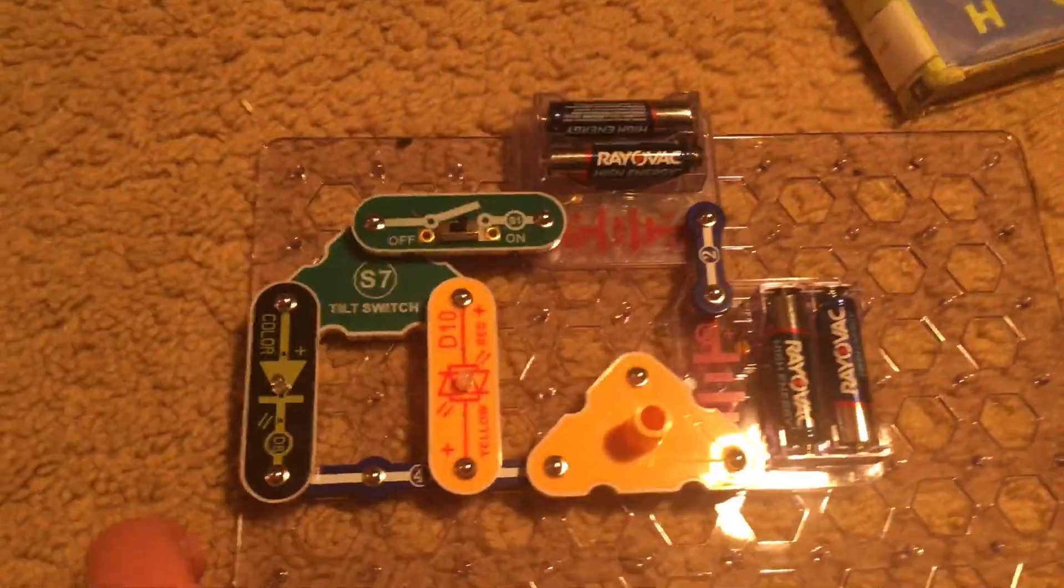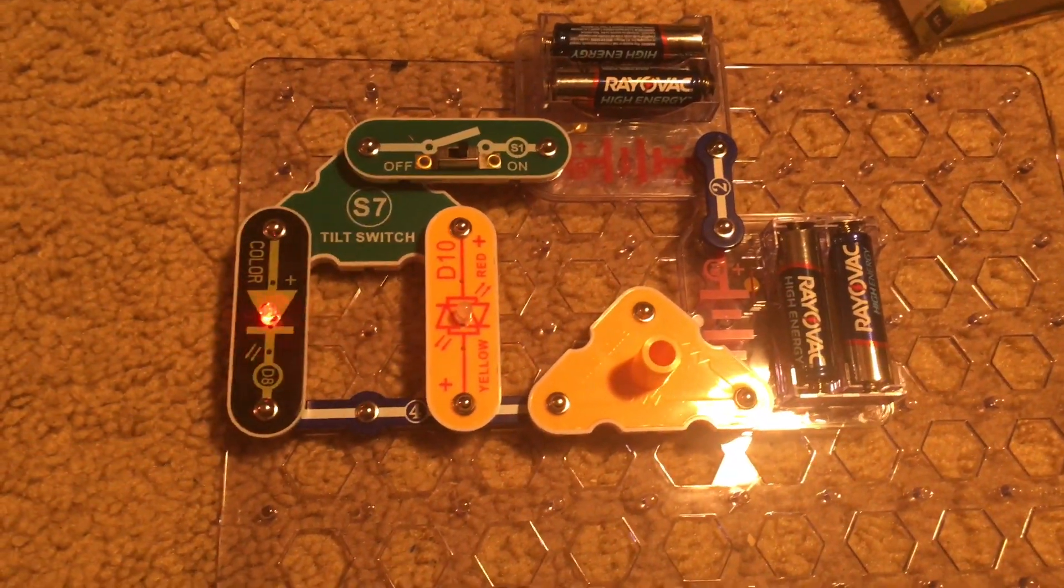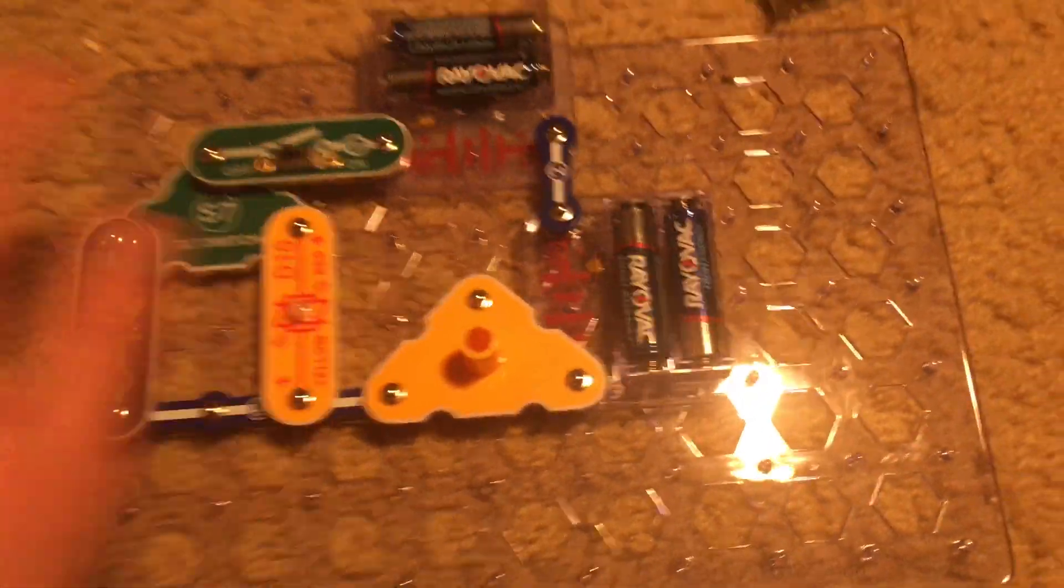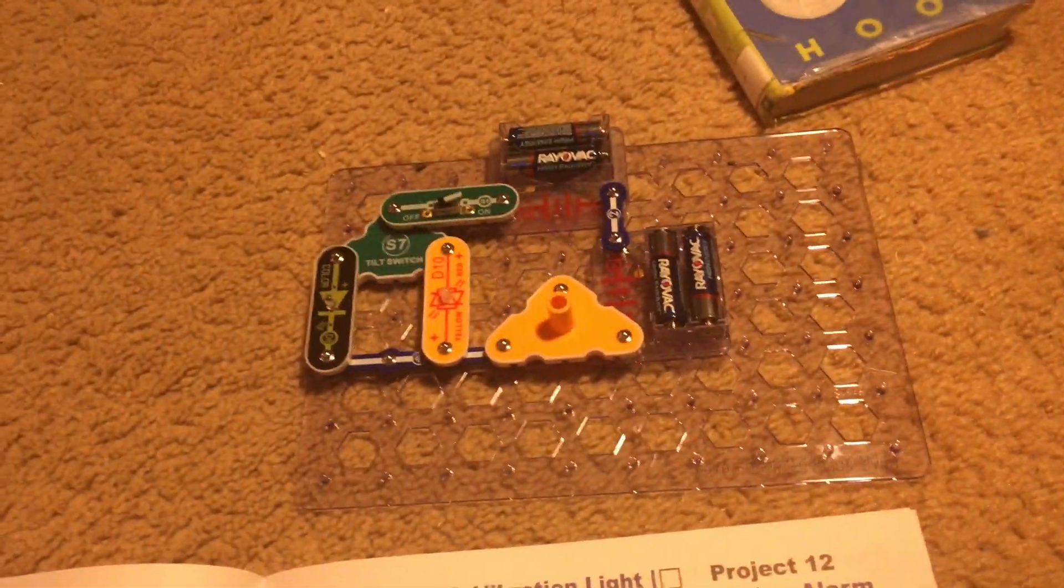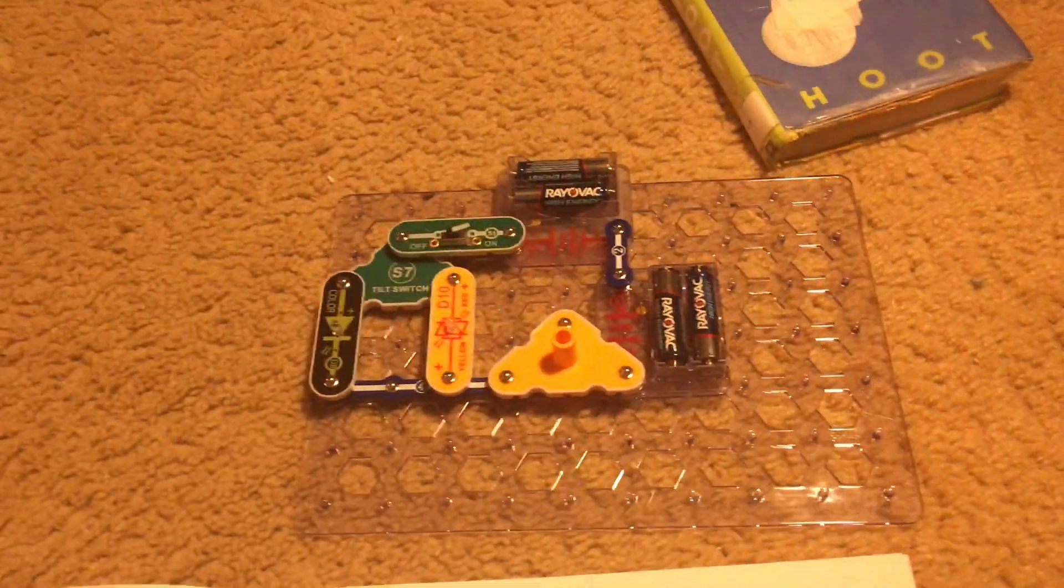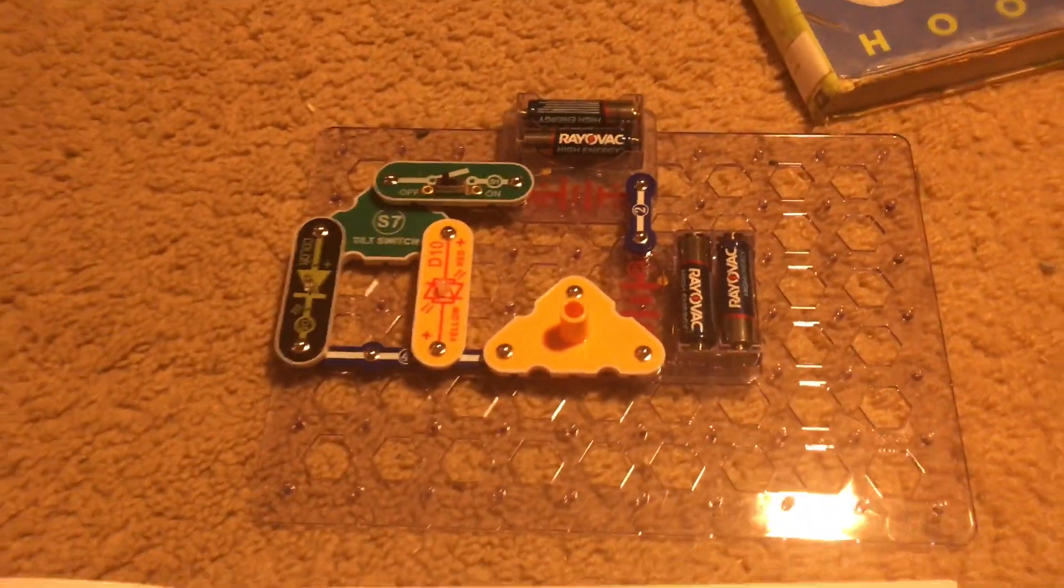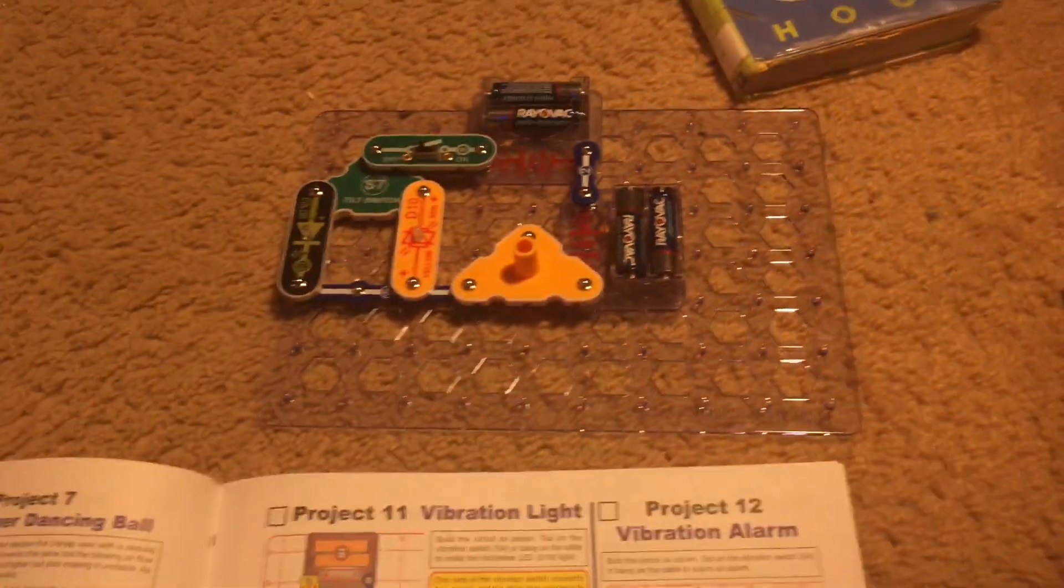If the circuit does not turn off when left alone on a flat surface, then tilt it slightly so it turns off, or just turn off the slide switch. You might have heard of this component if you watched my projects for the mini kit Snap Circuits motion detector, because the tilt switch is included in it.